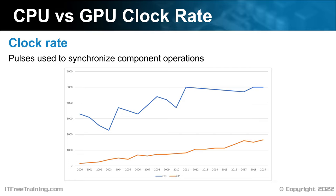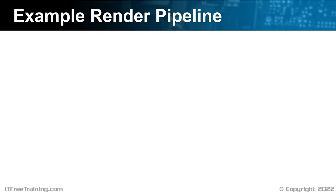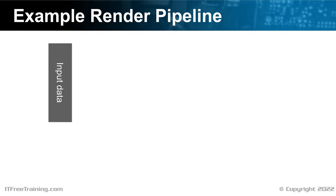To understand what different parts of the GPU may affect performance, I will first have a look at how 3D graphics are created using an example rendering pipeline. Data is inputted into the pipeline in the form of triangles. When you break down a complex 3D object, it is always broken down to the simplest element, which is a triangle. A triangle has the property that no matter where its three points are, it is always a plane — always a flat surface.